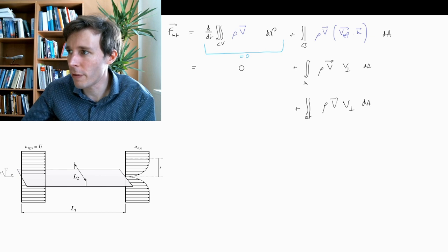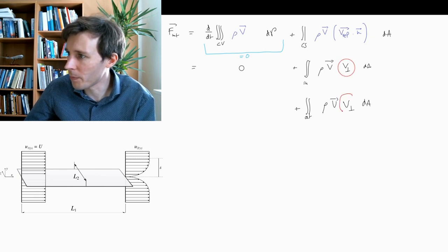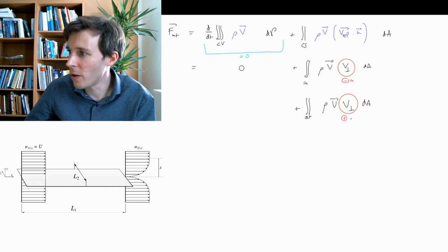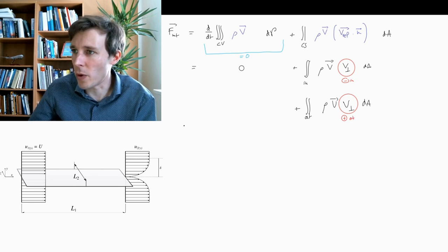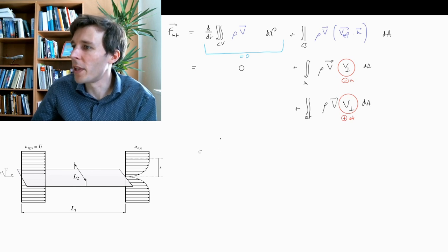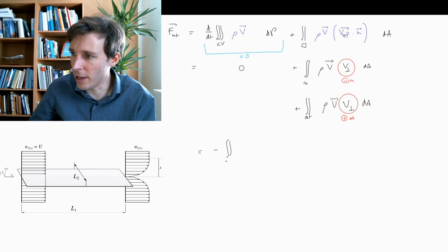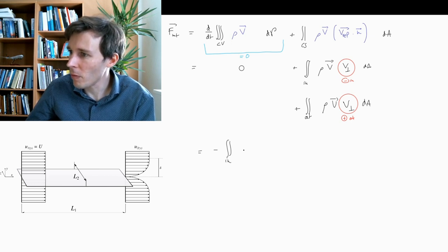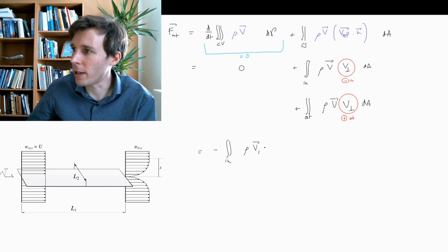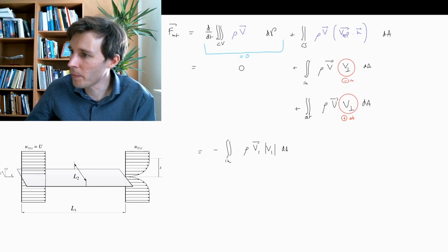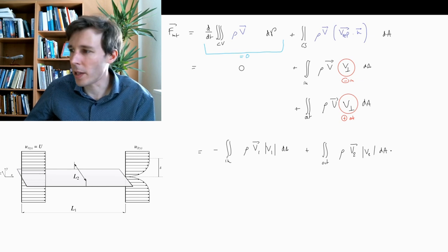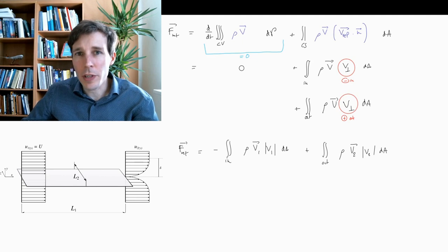A key point here is that the V_orthogonal term has different signs: it is negative at the inlet and positive at the outlet. So we rewrite this equation as: F_net equals minus the integral over the inlet of rho V1 |V1| dA, plus the integral over the outlet of rho V2 |V2| dA. This is the net force equation in general.